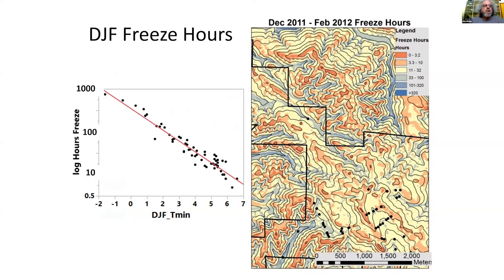We can convert that into an easily understood factor: freeze hours. On the left is the relationship between average winter minimum temperature and the number of hours below zero degrees C. The coldest spot had nearly 1,000 hours and the warmest spot had less than 10 — all within a 3,300-acre preserve. We can then make a map of that, which demonstrates a lot of climatic variability at the topoclimatic scale.